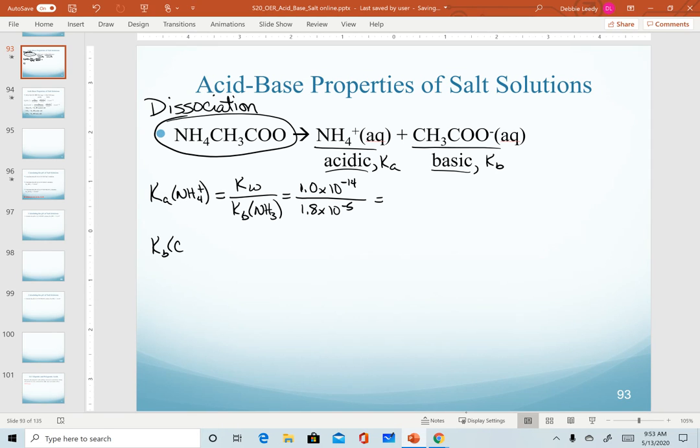So I'm just doing the setups here. We would do the same thing for acetate. Remember K values for ions always have to be calculated using Kw. I can never look up the Kb value of acetate. I can look up the Ka value of acetic acid. And this is where coincidentally, the Kb of ammonia and the Ka of acetic acid happen to be the same value.